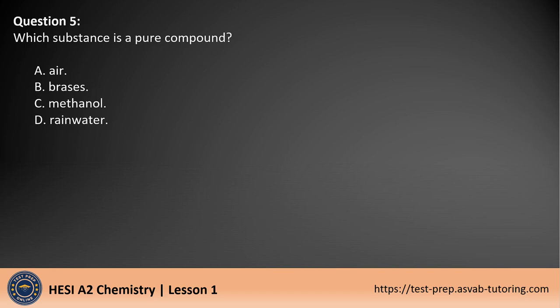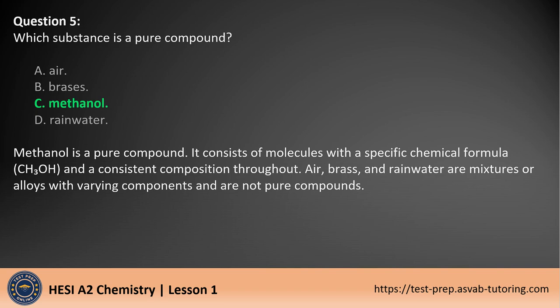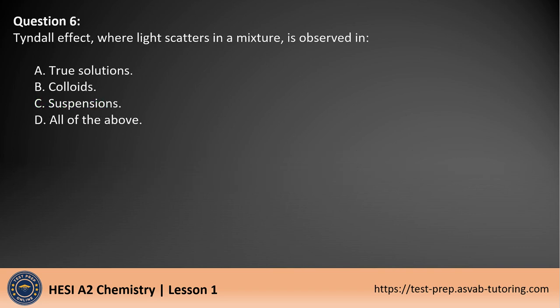Question 5. Which substance is a pure compound? A. Air. B. Brass. C. Methanol. D. Rainwater. The answer is C. Methanol is a pure compound. It consists of molecules with a specific chemical formula, CH3OH, and a consistent composition throughout. Air, brass, and rainwater are mixtures or alloys with varying components and are not pure compounds.